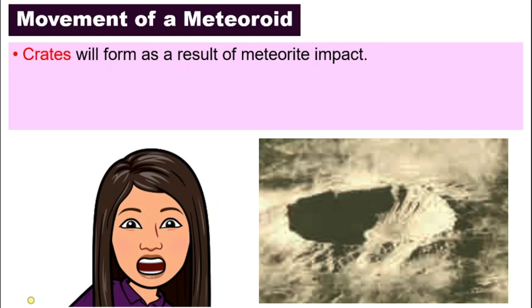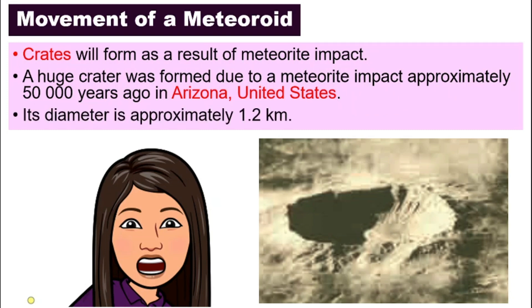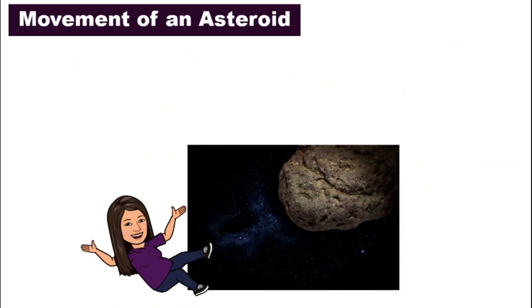It will form a crater, just like the one you see in this picture. It's a crater that was formed due to a meteorite impact that happened approximately about 50,000 years ago, and it is found in Arizona, United States. The diameter is about 1.2 kilometers. That is meteorite.